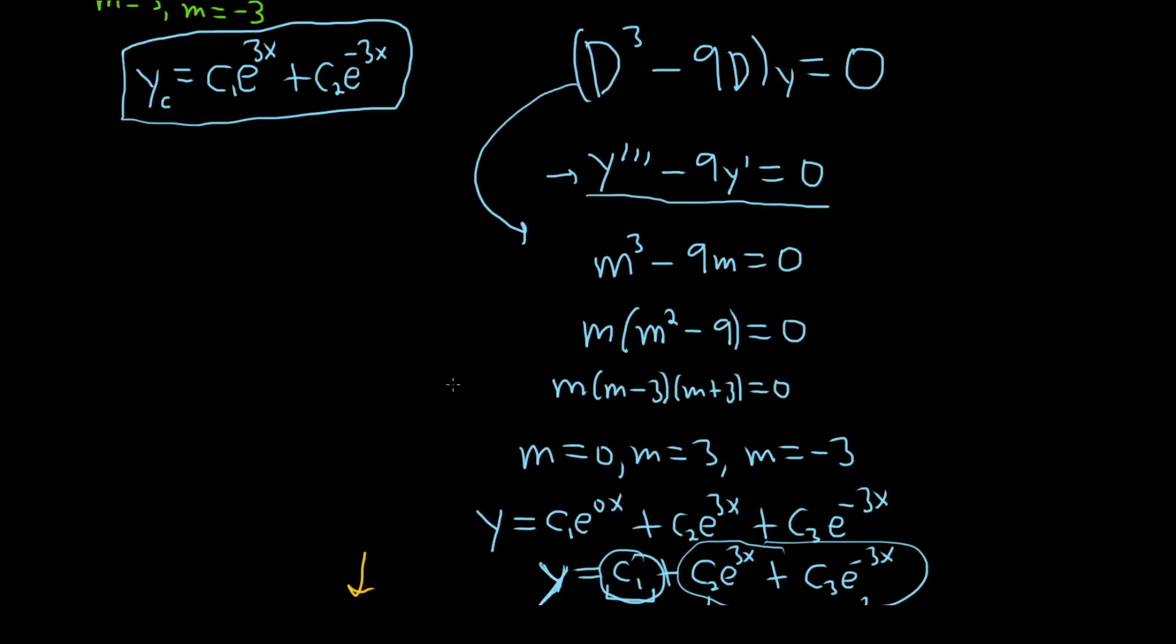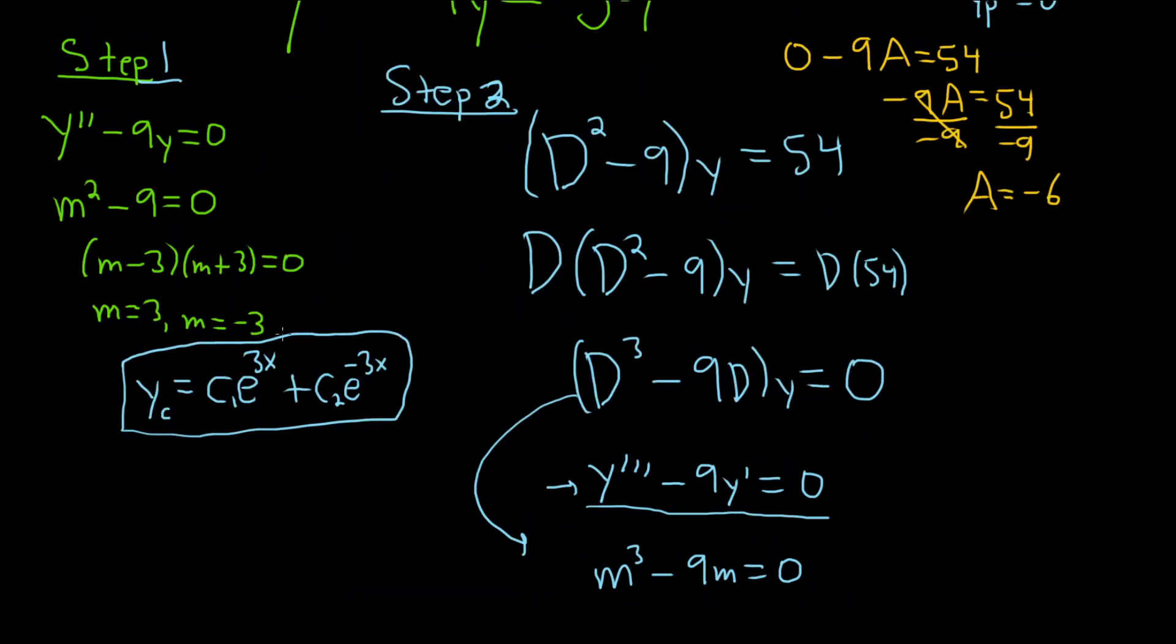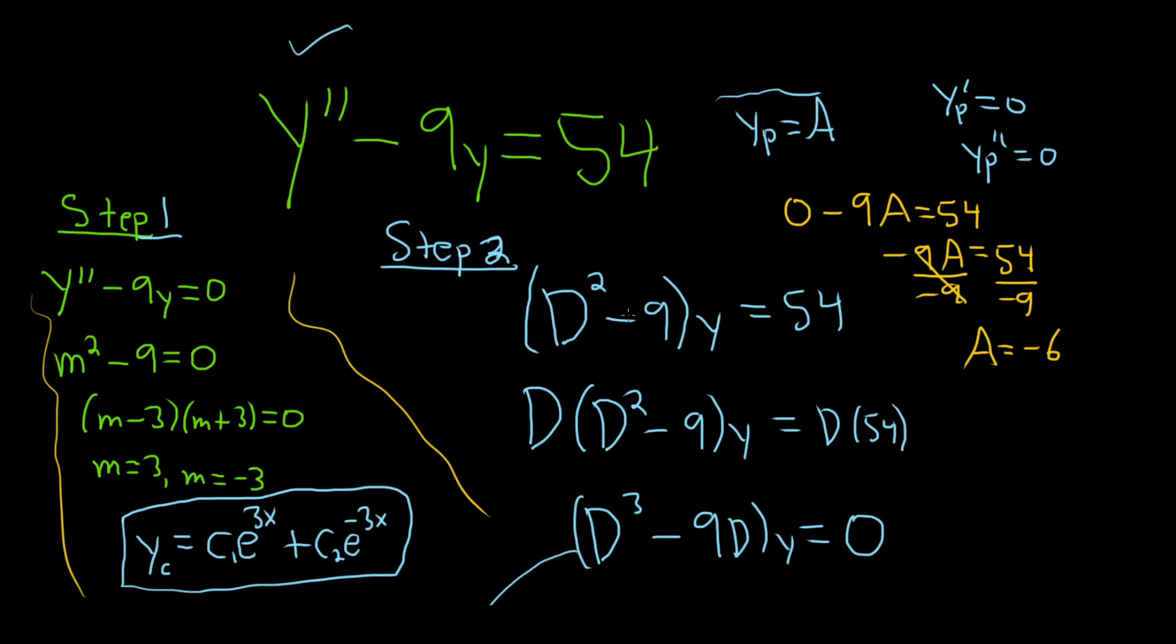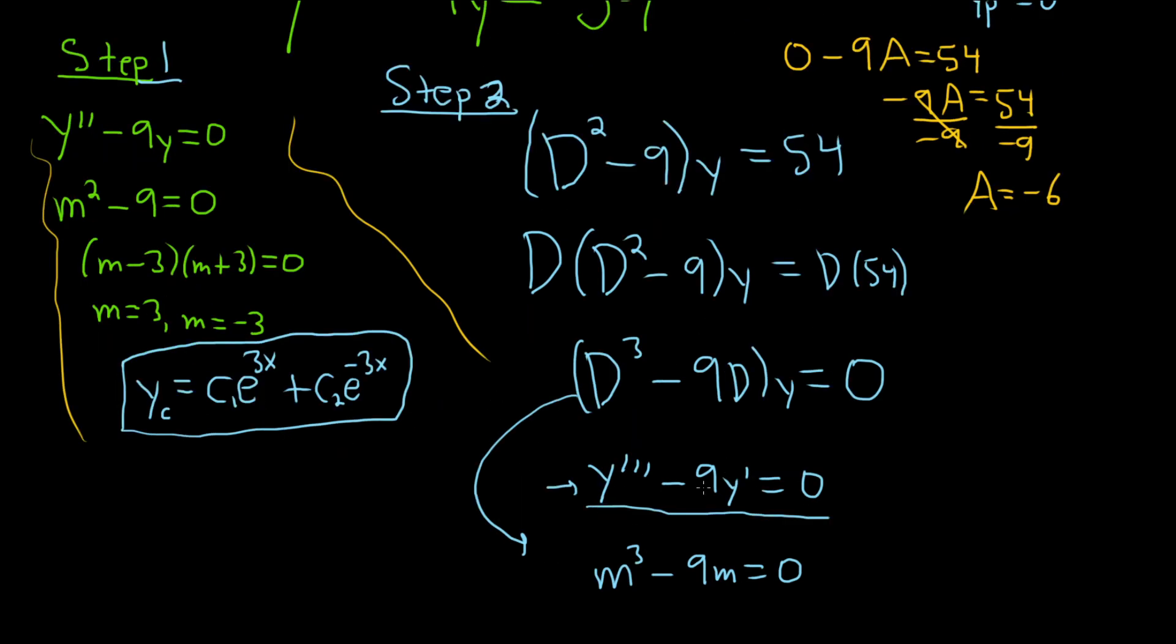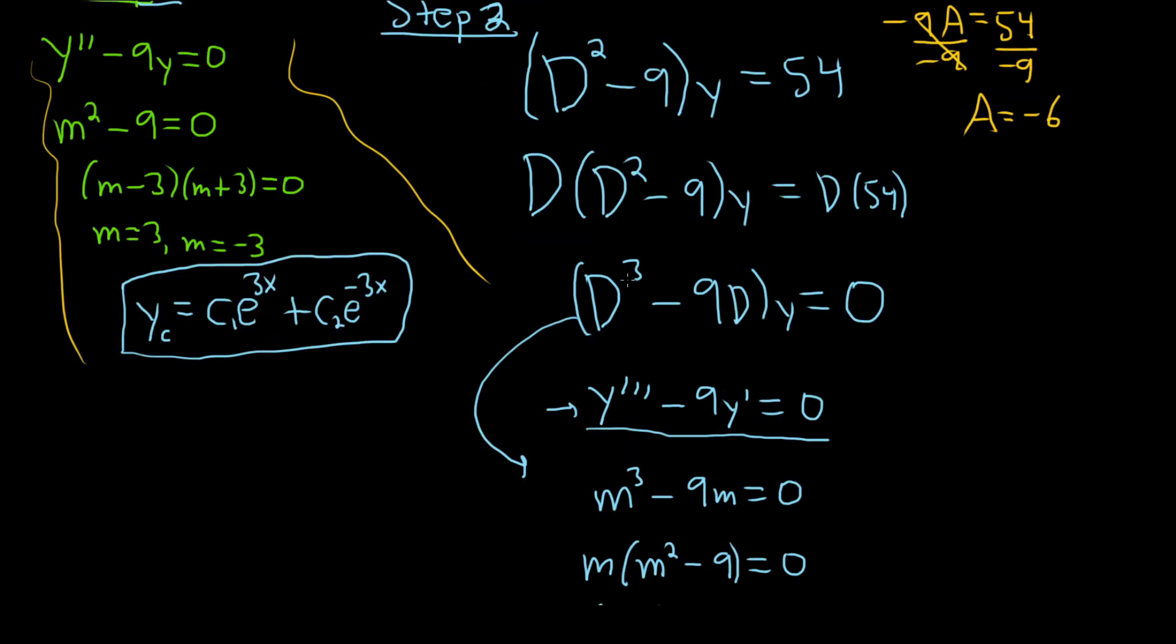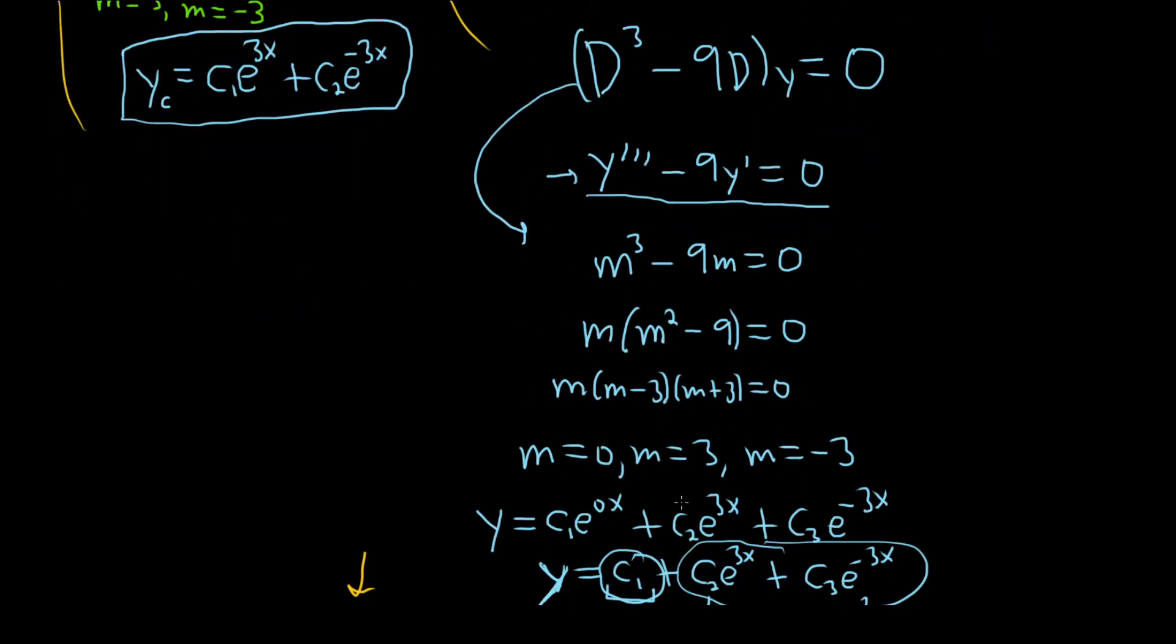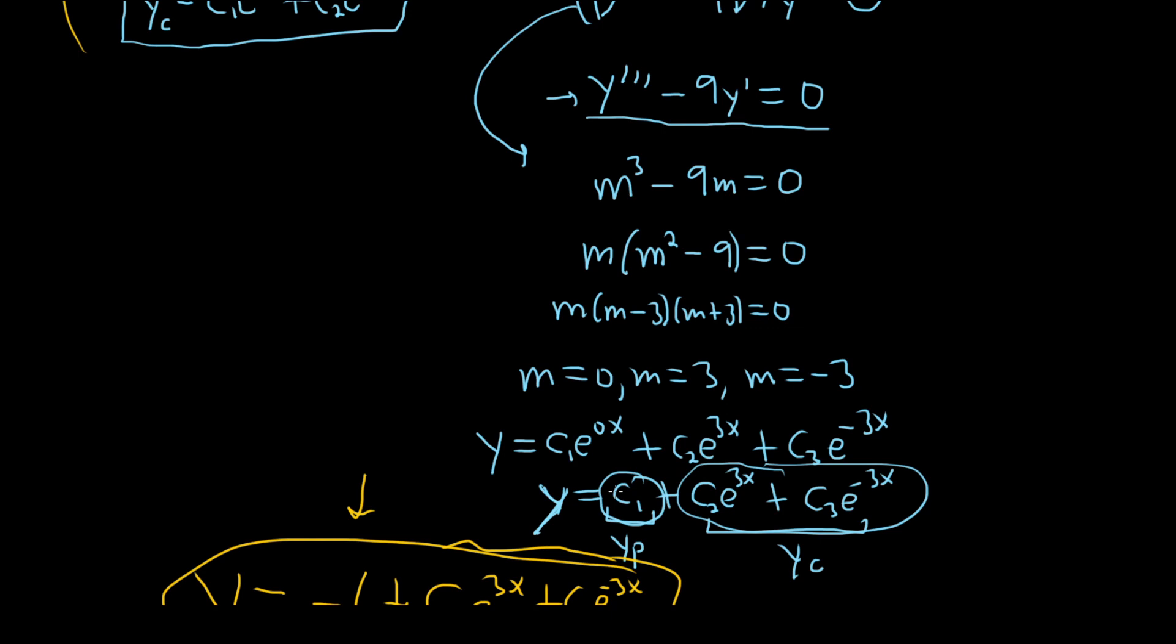It's very similar to the other methods. The first step is the same. And then when you get to step 2, just write it in differential operator notation, and then annihilate the right-hand side. Distribute. You get this here. I mean, these should be the same. Everything here should be equivalent. So you have this other DE here. And you get the answer to this DE, and this is where yp appears always.